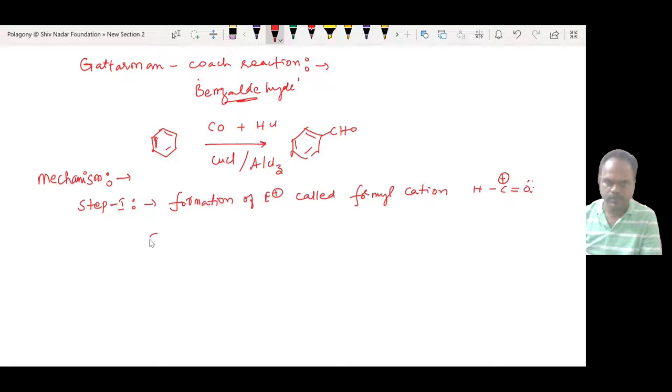To understand how this formyl cation forms, we must know the carbon monoxide structure. Carbon monoxide has a triple bond C≡O, with carbon bearing a negative charge and oxygen a positive charge. When carbon monoxide reacts with HCl, protonation occurs at the carbon.